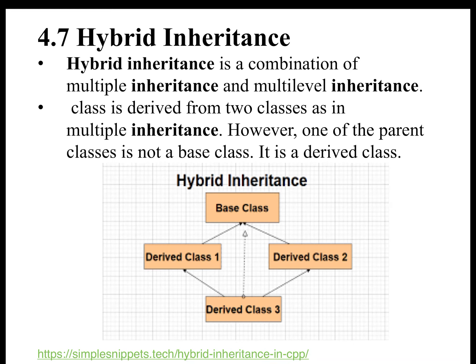Now let us understand Hybrid Inheritance. Hybrid Inheritance is a combination of Multiple Inheritance and Multi-Level Inheritance that we discussed in the last lecture. A class is derived from two classes as in Multiple Inheritance. However, one of the parent classes is not a base class — it is a derived class. Here, the graphical representation of Hybrid Inheritance is shown.